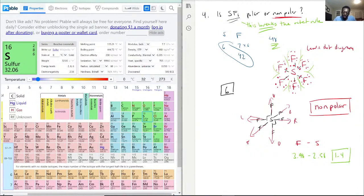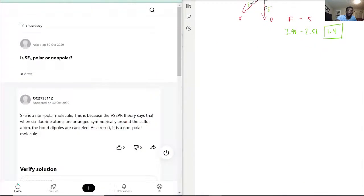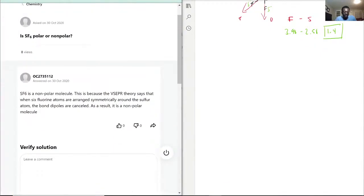So yes, all these bonds are polar and they do have an electronegativity, negative electronegativity going out, and the sulfur is a positive one. But because they're all pointing in equal and opposite directions, that's why it's a nonpolar molecule. It's nonpolar because VSEPR theory, because there was 6.0 and the bond dipoles are canceled. So they do mention that the bonds are indeed polar and because of that it's canceled. So this is correct.